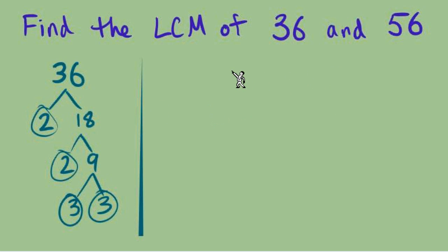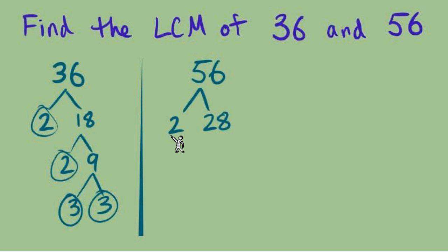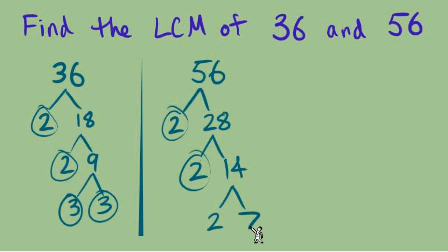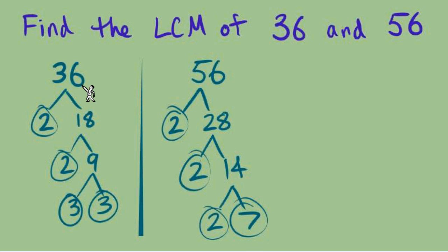Now let's break down 56. It's even, so 2 times 28. Circle that 2 as prime. 28 is 2 times 14; the 2 is prime. 14 is 2 times 7, and both of those are prime. So the prime factors of 56 are 2, 2, 2, and 7. And the prime factors of 36 are 2, 2, 3, and 3.